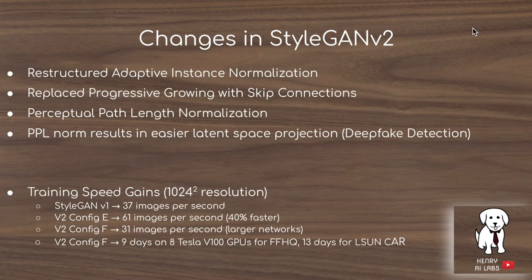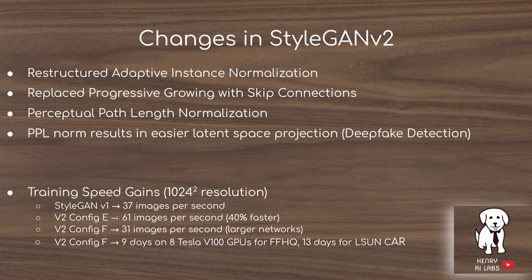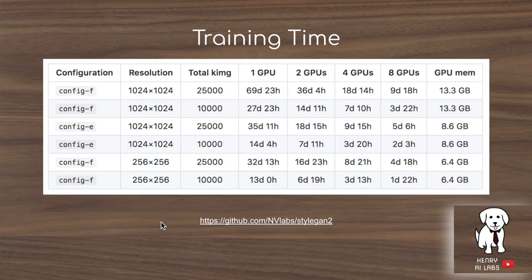To recap the video, some of the key changes in StyleGAN version 2 are to restructure the adaptive instance normalization using weight demodulation, replace progressive growing with the skip connection architecture, and use perceptual path length normalization. The perceptual path length normalization is probably the most interesting characteristic, resulting in a much smoother latent space which creates really cool animations and also improves generated image quality. In StyleGAN version 1 they get 37 images per second; version 2's E configuration is 40% faster at 61 images per second. Training takes 9 days on 8 Tesla V100 GPUs on the FFHQ dataset and 13 days for LSUN Cars. Their GitHub repository also provides useful data on training time, GPU count, and memory requirements for custom datasets.